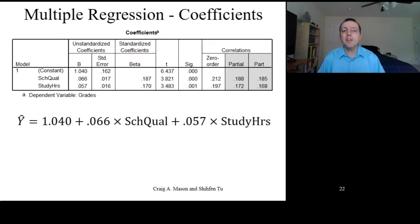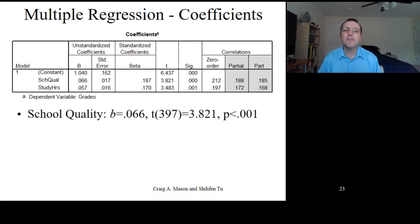Now, when we talk about the results, there are specific ways we need to report the analyses and specific language we need to use in order to be precise and accurate. Let's use the school quality variable as an example. When you report the results, you need to include the regression coefficient and the t-test results, including the degrees of freedom and the p-value. Specifically, you would report this as b equals 0.066 t with the degrees of freedom 397 in parentheses equals 3.821 and p is less than 0.001. Now, don't forget to include the degrees of freedom with your test statistic. You always need to include the degrees of freedom.